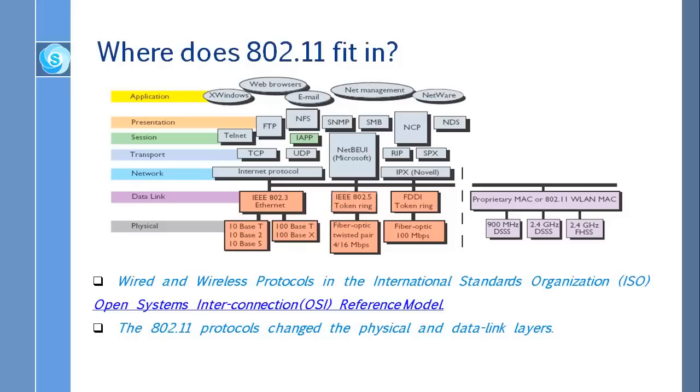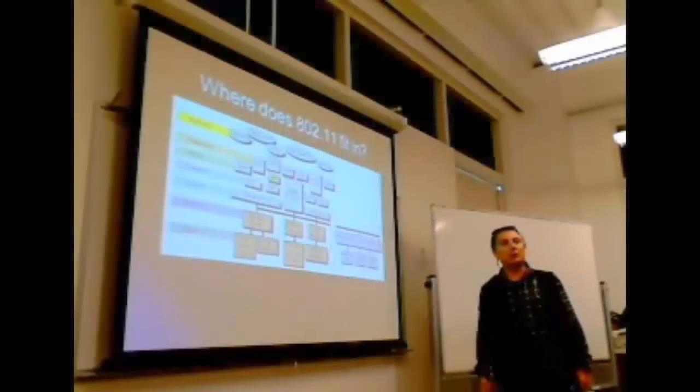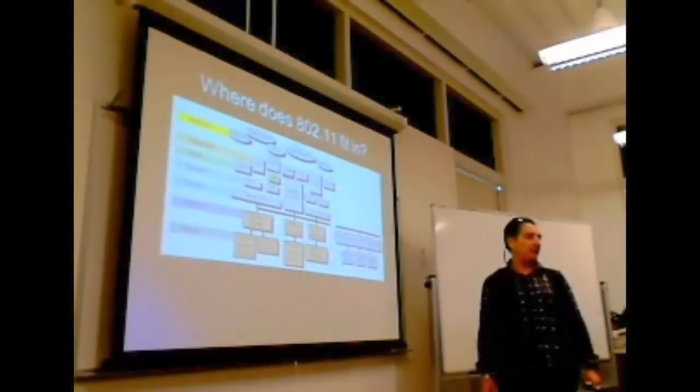But look at the wireless right now. When we discovered the wireless, we have to add a new MAC layer because you cannot use this MAC layer for wireless environments. So you see MAC for 802.11 WLAN. That is the MAC layer. That is 802.11 protocol.